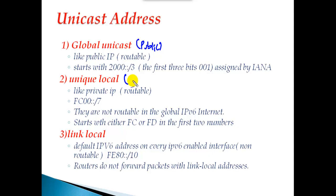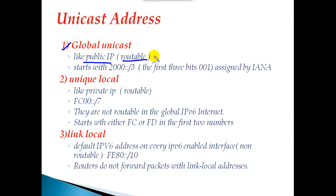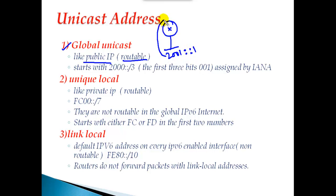The unique local address is more like your private IP addresses. The global unicast address is routable, meaning if you assign an IPv6 address like 2001::1, it will be advertised when using routing protocols, so the router carries that network information to other routers. Both global unicast and unique local addresses are routable.